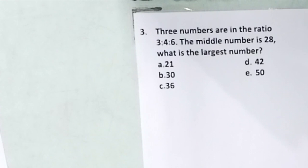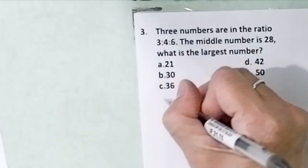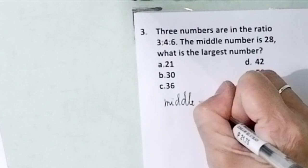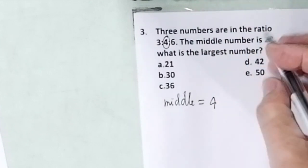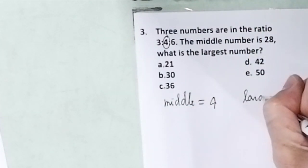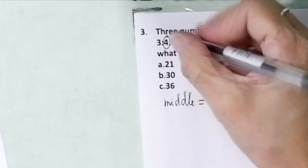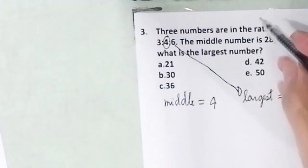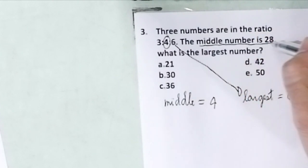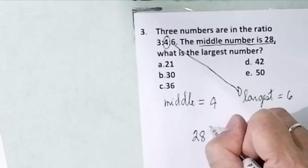Problem number three. Three numbers are in the ratio 3 is to 4 is to 6. This time you have three numbers. The middle number is 28. What is the largest number? The middle number has four parts. The largest is 6 — it has six parts. Since it is the middle number which is given, you divide 28 by 4.